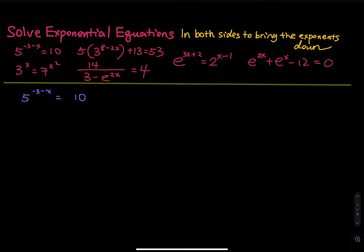Let's solve this exponential equation. Notice that the variable of each equation is in the exponent. So the primary method is we are going to take ln on both sides to bring the expression down.